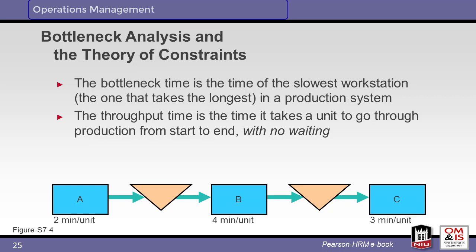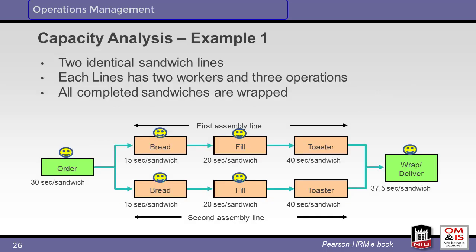The throughput time in this example would be 2 minutes plus 4 minutes plus 3 minutes for a total of 9 minutes. Note the difference between cycle time and process time. In this first example, we see two parallel assembly lines with identical process steps. Notice the process times for each step — where is the bottleneck?